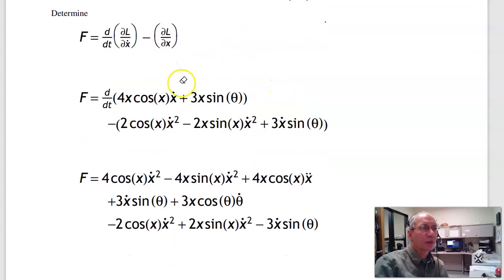Now for the full derivative, I need to take the derivative with respect to the first term. This is chain rule. It gives you 4 cos(x) times x-dot times x-dot, which gives you x-dot squared. Derivative with respect to the second term: derivative of cos(x) is -sin(x), times x-dot, times everything else. Derivative with respect to x-dot is x double prime.